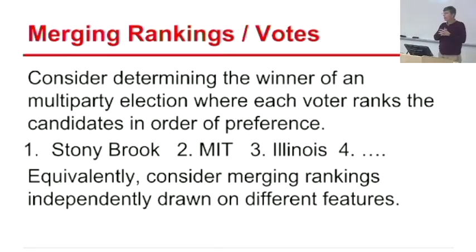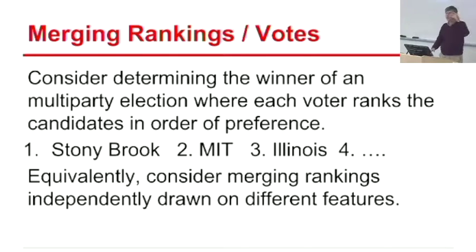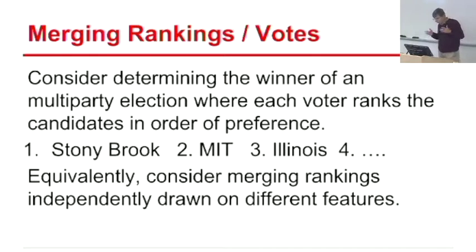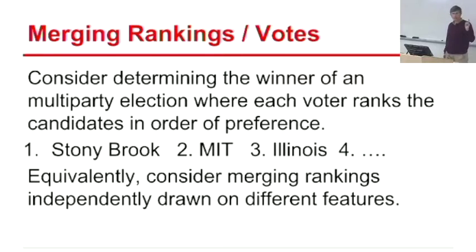Last class we were talking about ranking functions — ways that we would like to take data we have about entities and come up with some measure of merit. If it's restaurants, you'd like to know which is the best and which is the worst. We talked about simple linear combinations of scores, the Elo rankings, and some other things. Any questions about what ranking functions are or why we'd care about them?